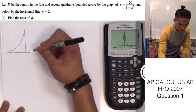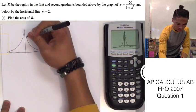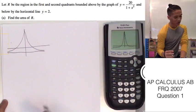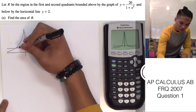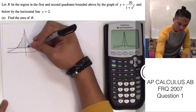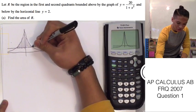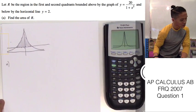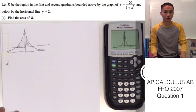So 20 over 1 plus x squared. Then we have our y equals 2. And R is going to be this region above y equals 2 and below our other function. And now we can answer part A. Part A is asking us to find the area of R.